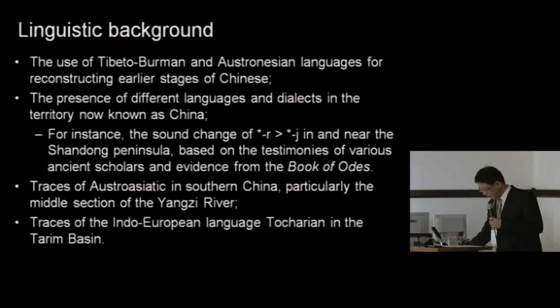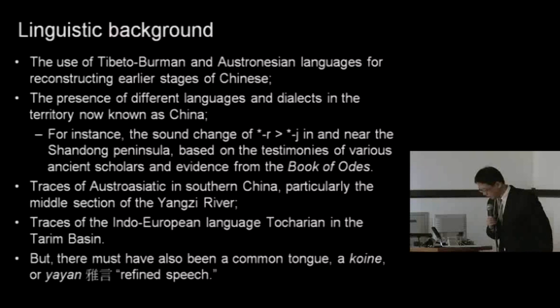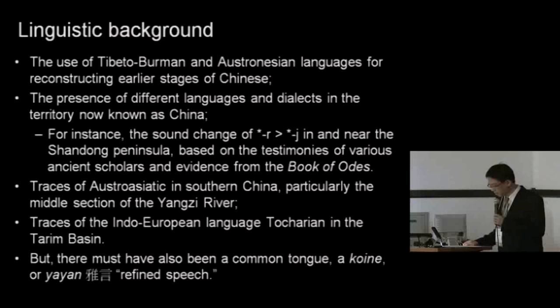So, in spite of all this, it is likely that there was a common tongue — what is called koine in Latin and yayan in the Chinese literary record — a common language that made communication possible among the speakers of the different languages inhabiting the area that we now call China. And this is a topic that I will come back to by the end of my presentation.